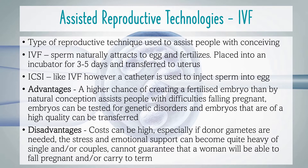ICSI is a similar process and is used in the case of male infertility — a catheter is used to inject sperm directly into the egg. Advantages of IVF include a higher chance of creating a fertilized embryo than by natural conception, assisting people with difficulties falling pregnant, and embryos can be tested for genetic disorders. Disadvantages include high costs, especially if donor gametes are needed, significant stress and emotional burden for individuals or couples, and it cannot guarantee that a woman will be able to fall pregnant and carry to term.